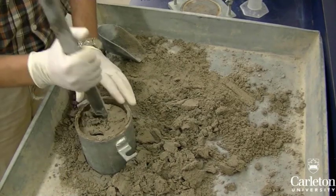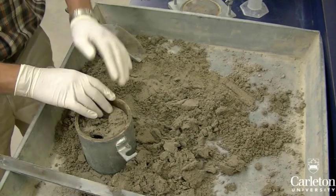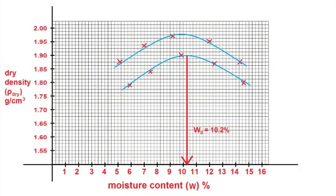Just as in the standard test, we will need to repeat this test at increasing moisture contents until we find a maximum density. We will know this once the total mass of the soil plus mold begins to drop. Density and water content are calculated in the same way as before. Once again, plot the points on the graph, connect them with the curve, and find the moisture content corresponding to the maximum density.